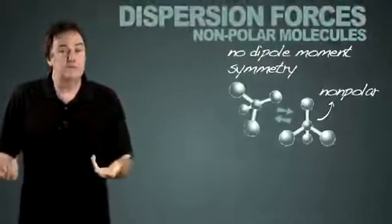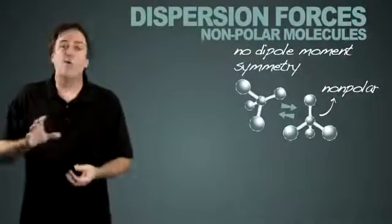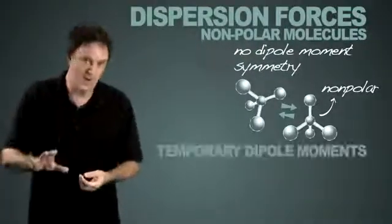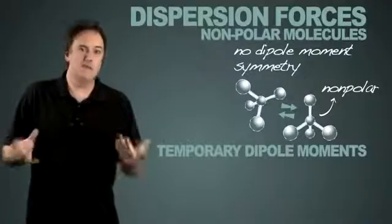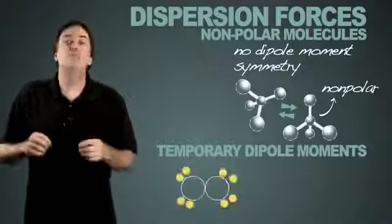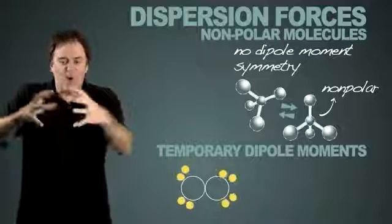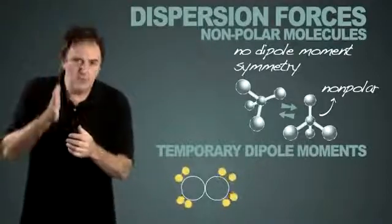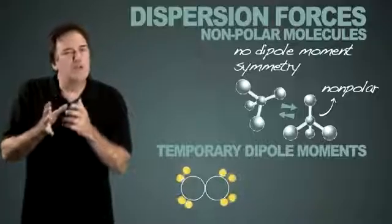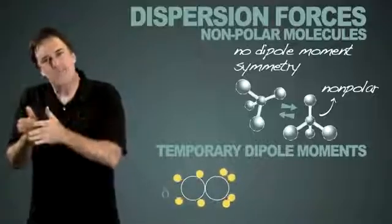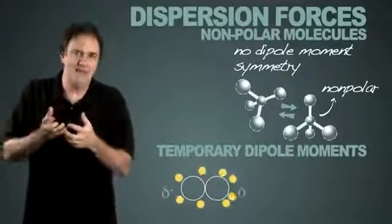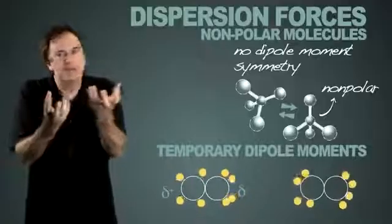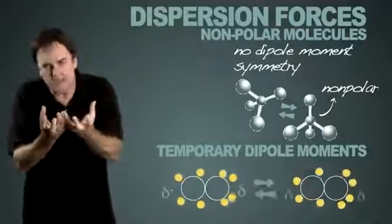They're dispersion forces, and they are based on what we say are temporary dipole moments. Temporary dipole moments is when the electrons within the whole molecule are in such flux, that at any one point in time, you're going to catch it with a slight positive end and a slight negative. And another molecule is going to get caught in that same time, and there's going to be an attraction there.